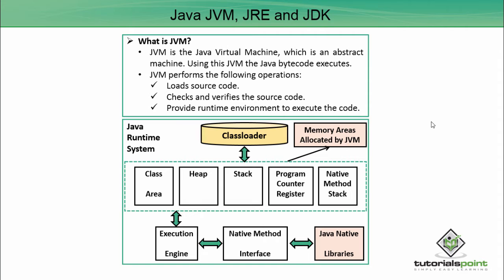Now concentrating on the JVM architecture: from this diagram we find that the class loader is interacting with memory areas as allocated by the JVM. These memory areas are allocated for different purposes — class area, heap, stack, program counter register, native method stack, and so on. Class loader is a subsystem of JVM used to load class files. Whenever we run a Java program it is loaded first by the class loader, and there are 3 built-in class loaders in Java: bootstrap class loader, extension class loader, and system application class loader.